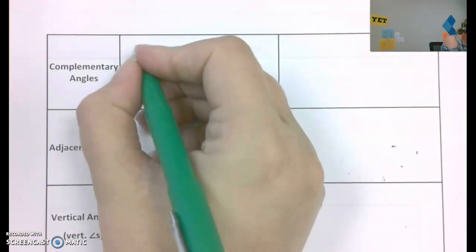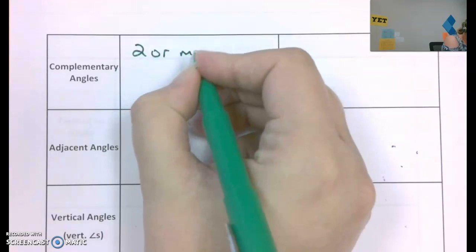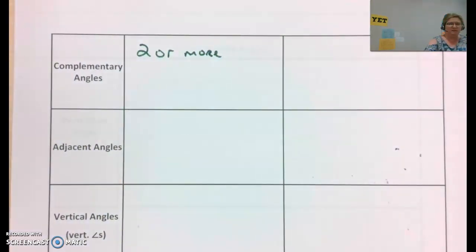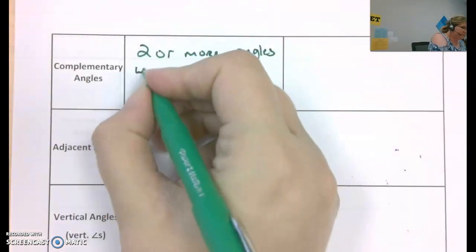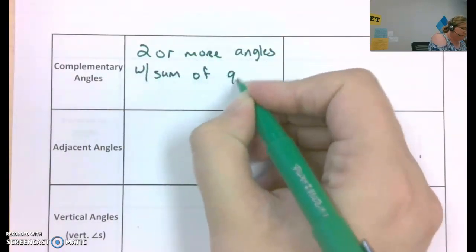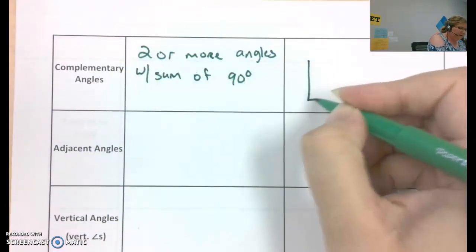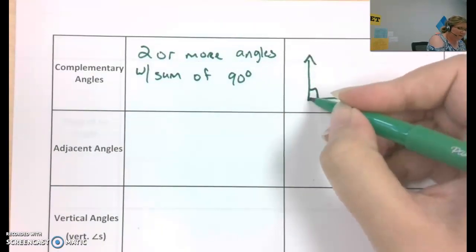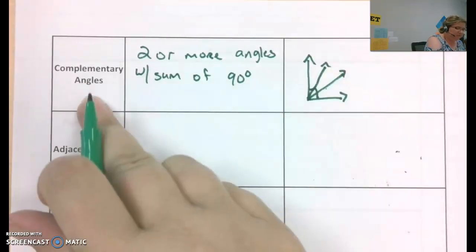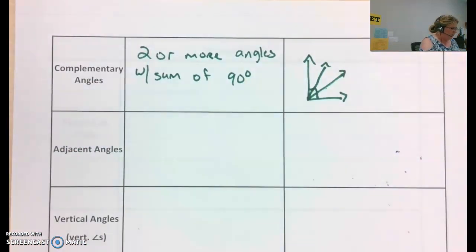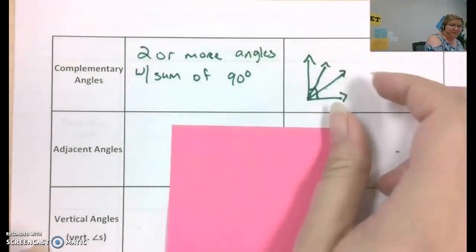So as a diagram, here's a 90 degree angle. What if I separated that into two or even three different angles? These are complementary. A lot of people confuse complementary and supplementary angles.